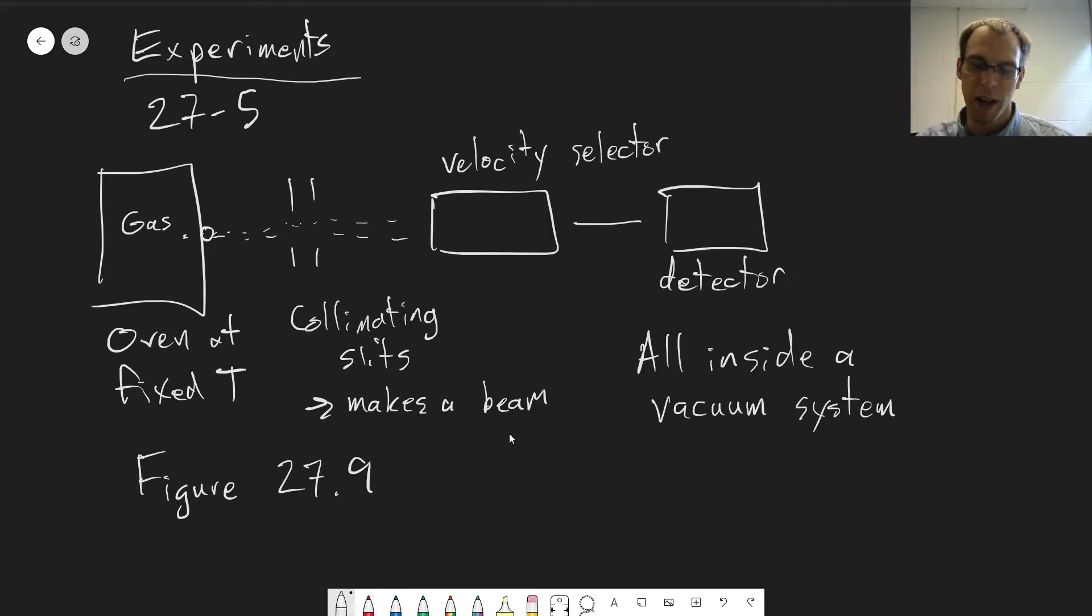And as you speed it up, you're getting faster and faster particles that are going to make it through. And that's the way you can map out this distribution and show that it does indeed match the experimental and theoretical results match each other.